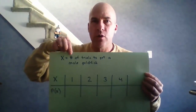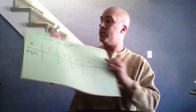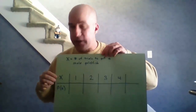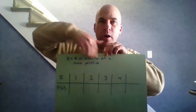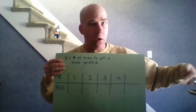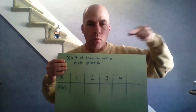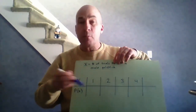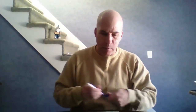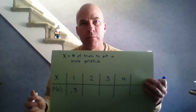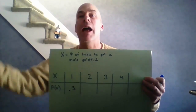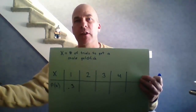For the probability distribution, let X equal the number of trials to get a male goldfish. I'll set up a probability chart for X equals one, two, three, or four — though note this could go on for a long time. What's the probability of succeeding on the first trial? 30% of them are male, so the probability it takes just one trial is 0.3.